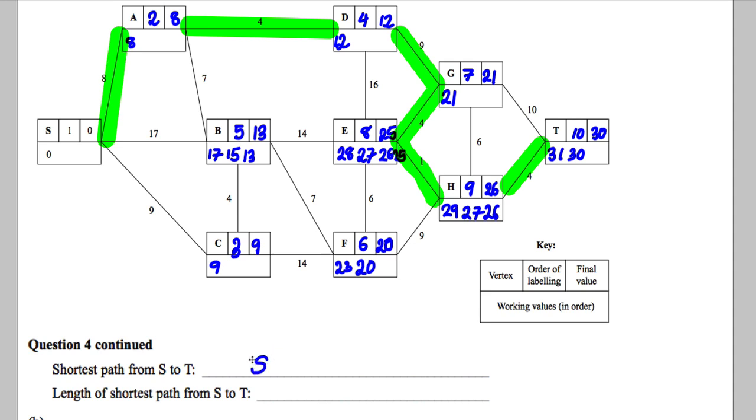My path is S to A to D. So S, A, D, G, E, H. So G, E, and H. And then T, like that.